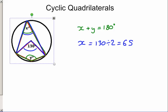Now, if x is 65, and we know that x plus y is 180, then we can work out y, because y is equal to 180 minus x.